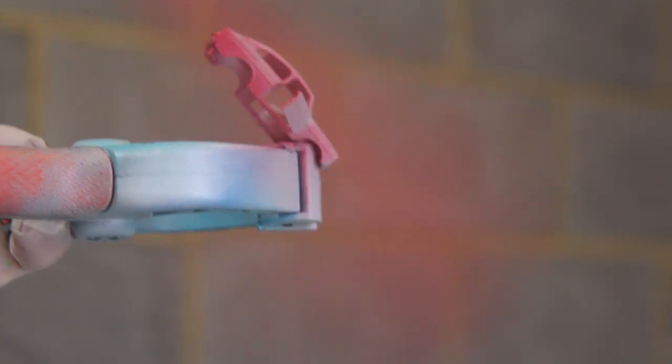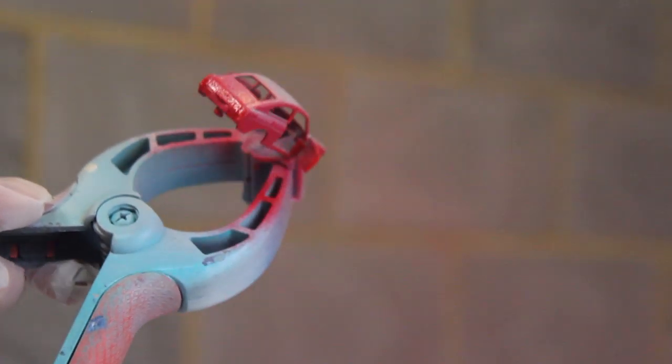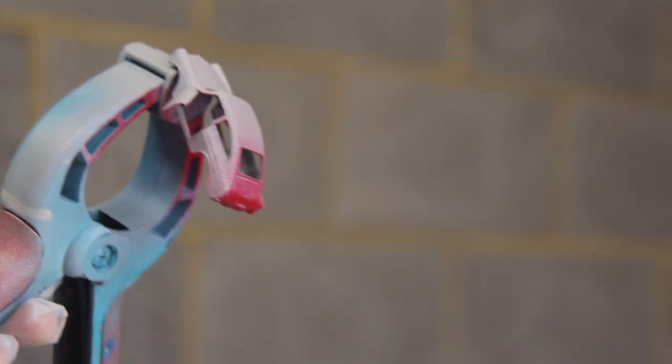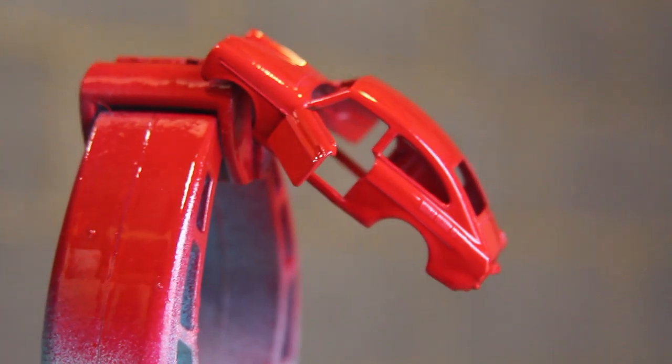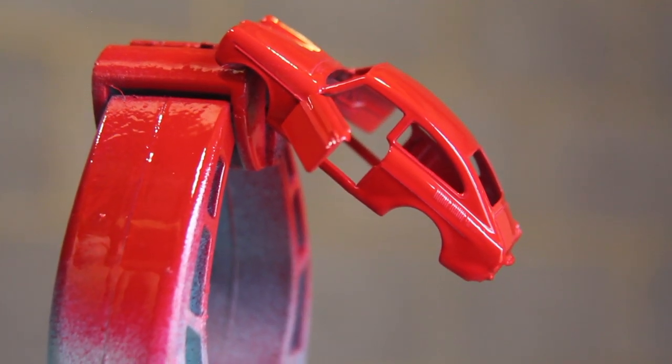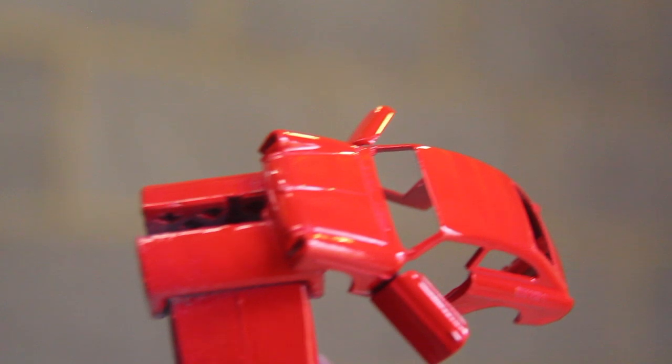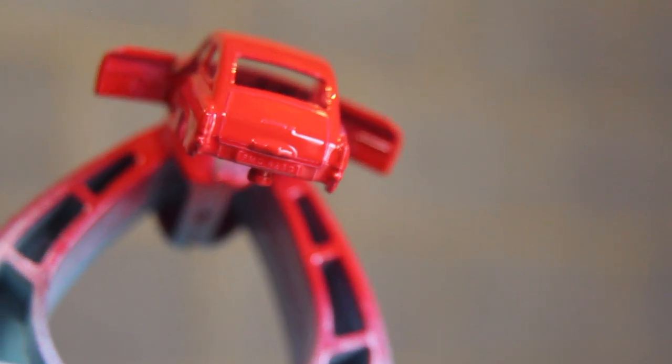Paint of choice today is the Tamiya TS8 Italian Red, a very close match to the original red of the model. It's really quite vivid, stands out and I think it will suit the final model. You can barely notice any of those joins now. The color's applied and it certainly looks pretty good to me.